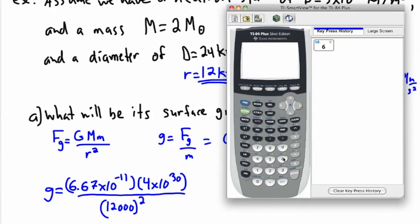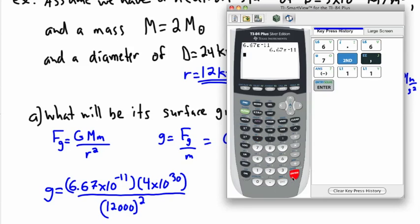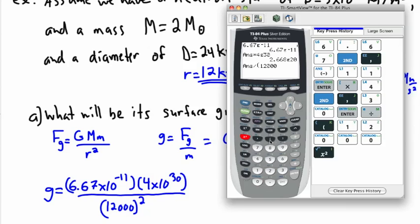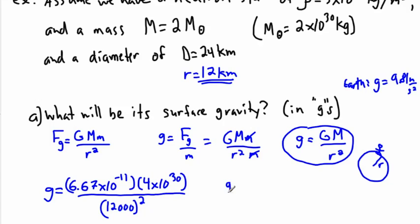We'll do 6.67×10^-11, multiply that answer by 4×10^30, and divide it by 12,000 squared. It's important not to forget the squared. We end up with a value of 1.8, roughly, times 10^12. If we're using only two significant figures, we'll say 1.9. So g = 1.9×10^12 meters per second squared, which is huge.